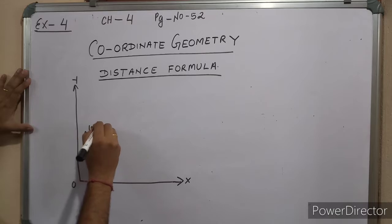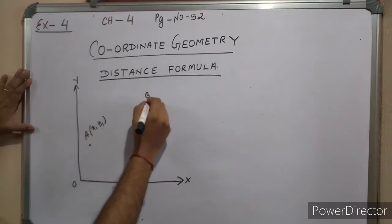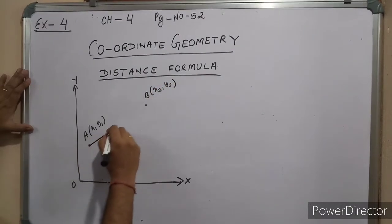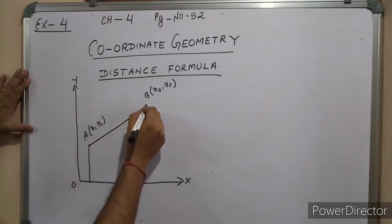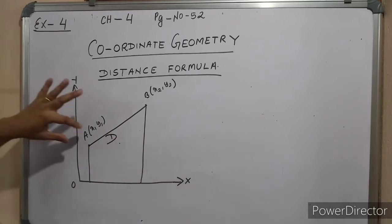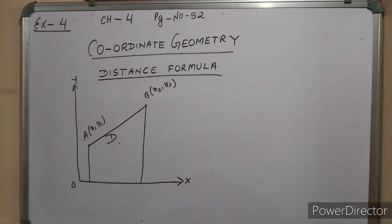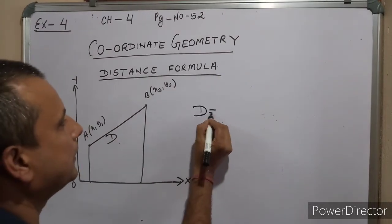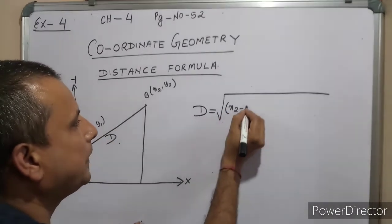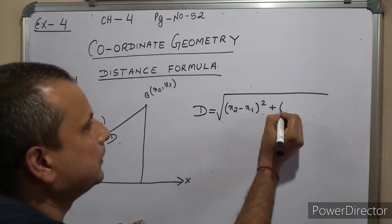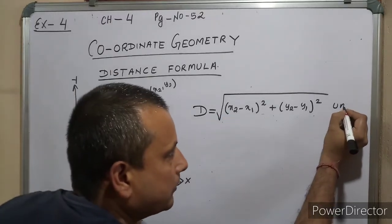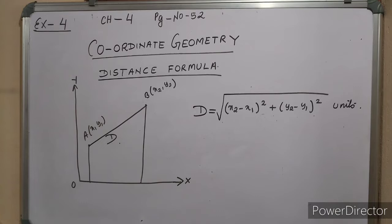Suppose there are two points: A at (x1, y1) and another point B at (x2, y2). Let's suppose the distance between A and B is D. The formula is: D equals square root of (x2 minus x1) whole square plus (y2 minus y1) whole square. Then you add the units, like centimeters or kilometers.